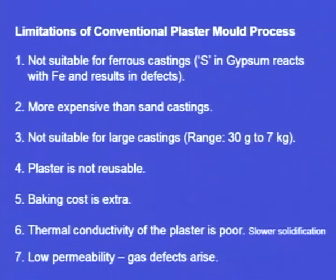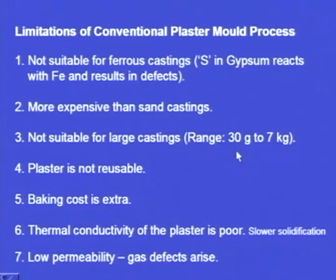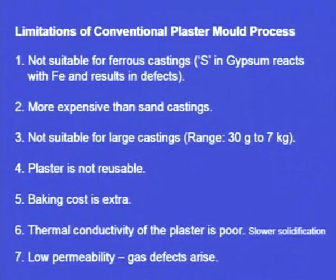In conventional sand casting the mould is made of sand, which is not costly; here the mould material is plaster, which is costly and can be used only once. In sand casting the sand can be used again and again, but in plaster of Paris the plaster can be used only once, making the whole process very expensive. The process is also not suitable for large castings — the range is 30 grams to 7 kg maximum. The plaster is not reusable, which increases the cost of production, and baking cost is extra — the plaster mould must be kept in an oven for about 20 hours.